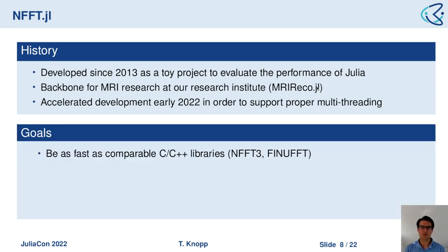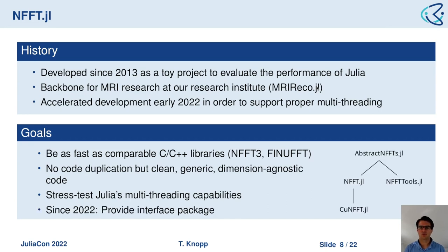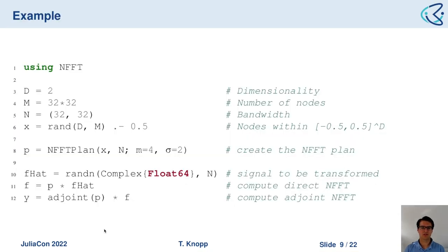In early 2020, development was accelerated because we wanted to implement multi-threading, which required some architectural changes. The goals are to be as fast as comparable C/C++ libraries, have clean generic dimension-agnostic code, stress-test Julia's multi-threading capabilities, and provide an abstract NFFT.jl interface package that also hosts wrapper libraries for NFFT3 and FiNUFFT.